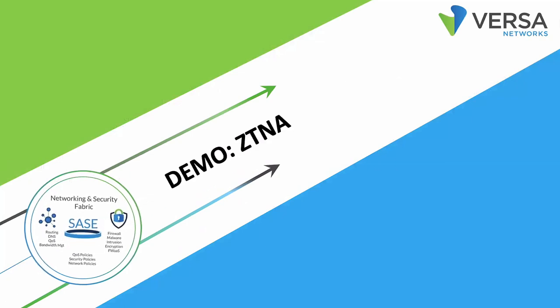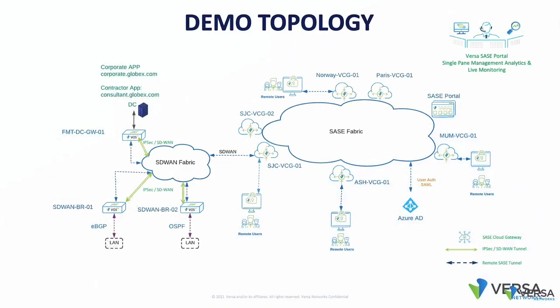Let's see some of these in action. For our demonstration, I have a demo topology with six different gateways across the world — three in the US (San Jose 1, San Jose 2, and Ashburn) and three others (Norway, Paris, and Mumbai). I also have clients in different parts of the world — Mumbai, Norway, San Jose, and Ashburn. For identity, we're using Azure AD as our identity provider. I've also brought up two applications — corporate.globex.com and consultant.globex.com — in a Fremont data center connected through an SD-WAN fabric extended from our SASE fabric, all monitored in real time from our Versa SASE portal.